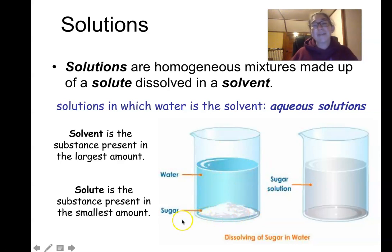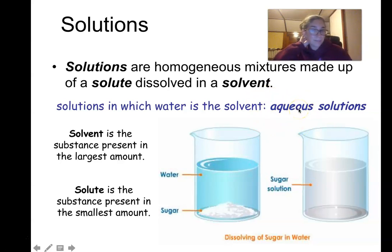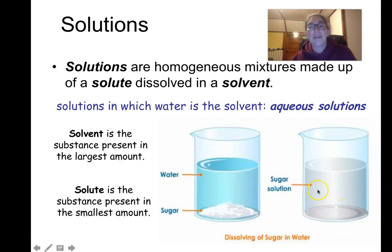A very common solvent on Earth is water, and any solution that uses water as a solvent is called an aqueous solution — aqua meaning water. For example, sugar and water mixed together form a sugar solution. It's homogeneous; you can't see the sugar particles, but they're there, evenly distributed throughout the water.